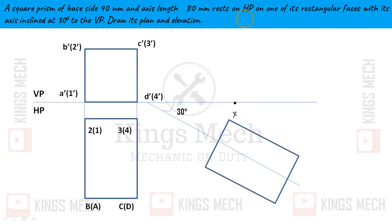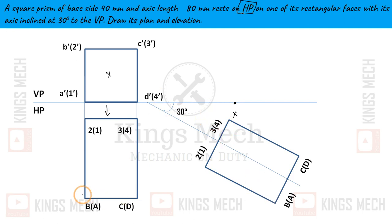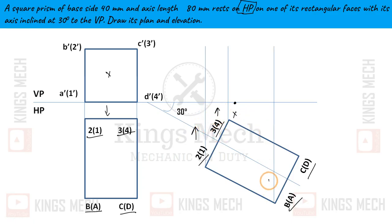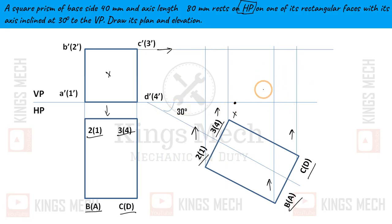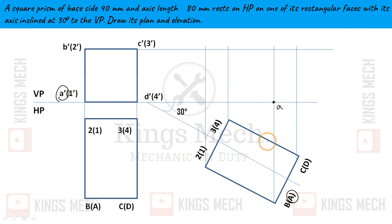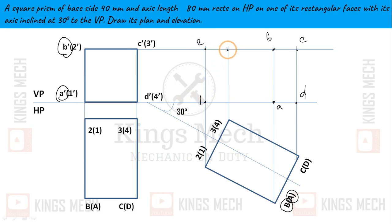On HP, with VP and the axis established, the top lines are drawn. This gives us point B, point C, and point D. Likewise, mark points 1, 2, 3, and 4 to complete the labeling of all corners of the square prism in the elevation and plan views.